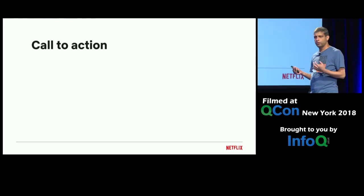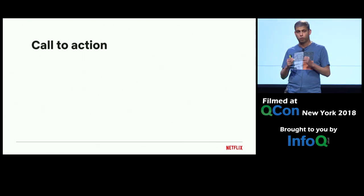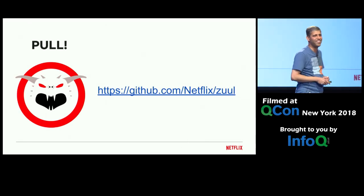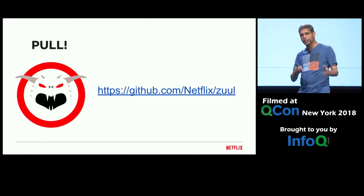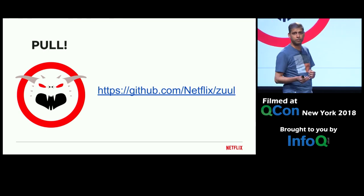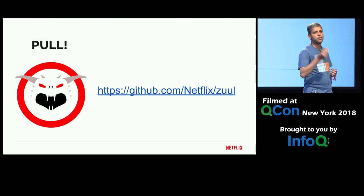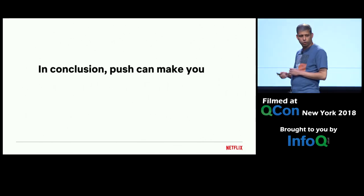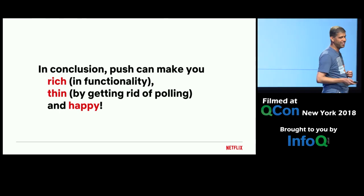I've been talking for more than 40 minutes making the case for push, and at this point I have only one last request to make to all of you: pull. All of this we discussed, everything we discussed so far, is open source. You can find it inside the Zul project in our Netflix OSS repo on GitHub. It even comes with a toy sample Zulpush server that you can fire up immediately and start playing with. So give it a spin, file bugs, and if you'd be so kind, maybe send us a pull request or two. In conclusion, push can make you rich, thin, and happy. Thank you.